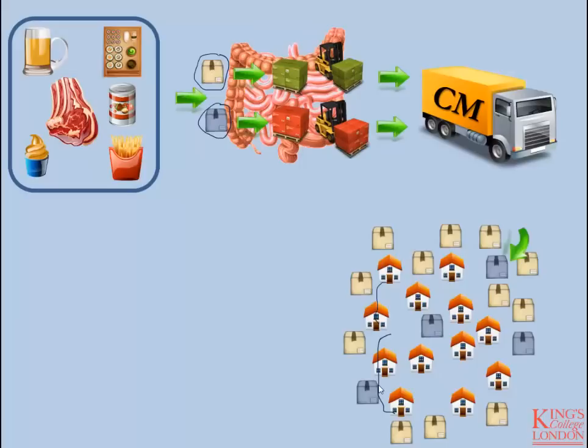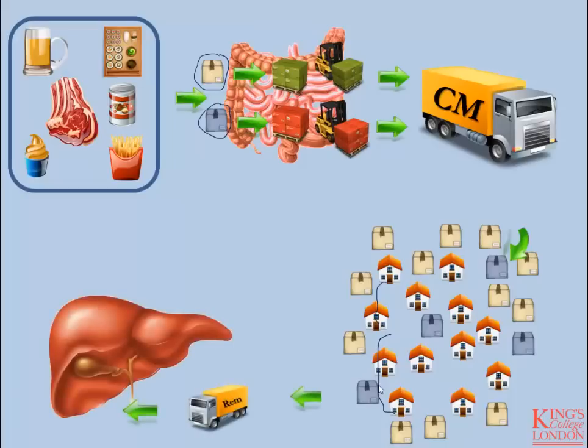These nutrients are then shipped around to the individual cells, unloaded from the chylomicron, and taken into the cells via specific processes. Once the truck has been emptied of its product, this is when you now have a chylomicron remnant.